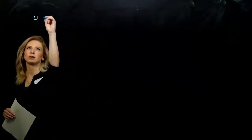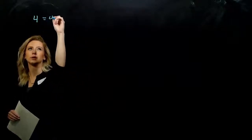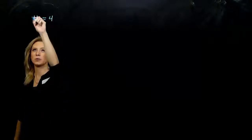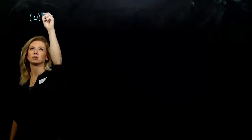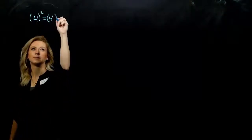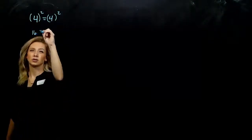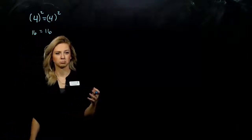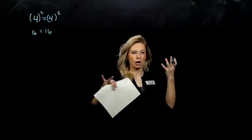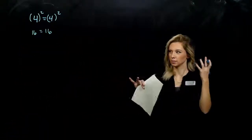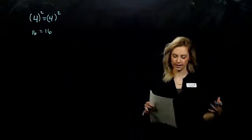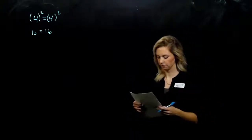So the principle says: if I have two things that are equal to each other, and I square both sides of the equation, the result is still true. If I have an equality and I square both sides, it's still true. What I do to one side, I have to do to the other.